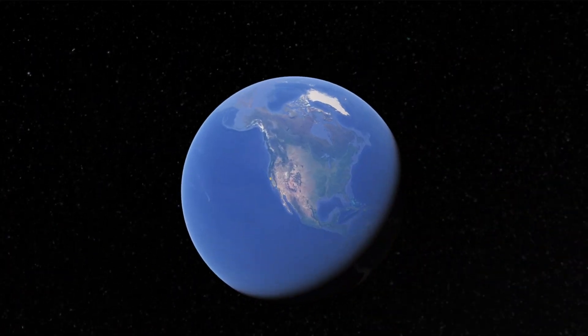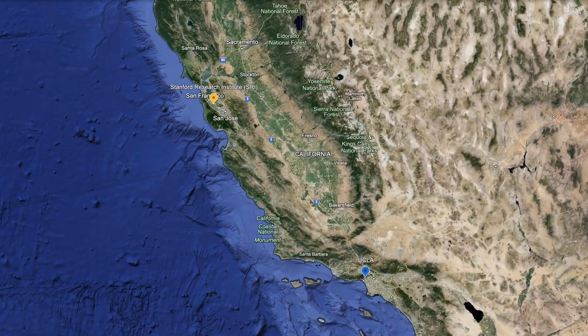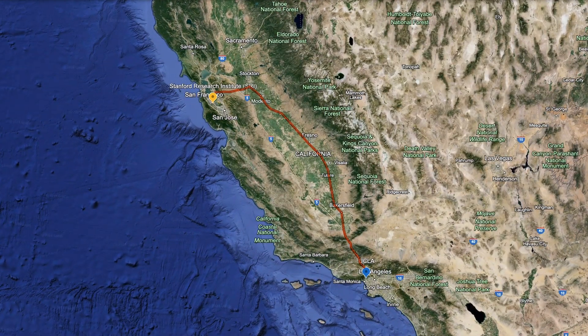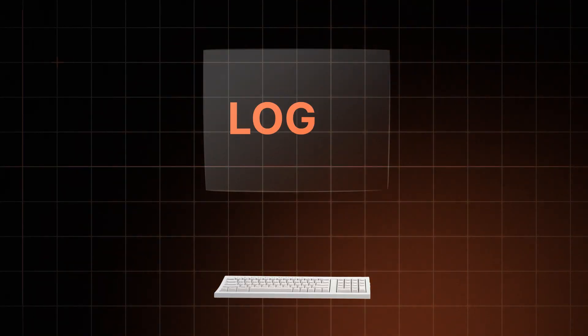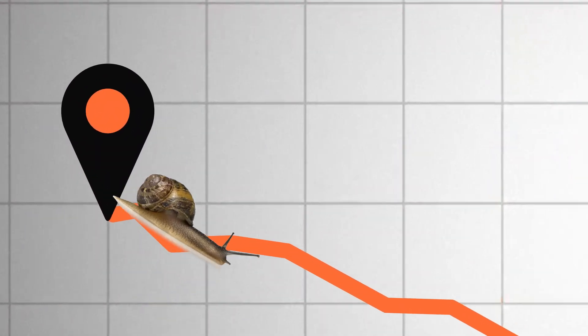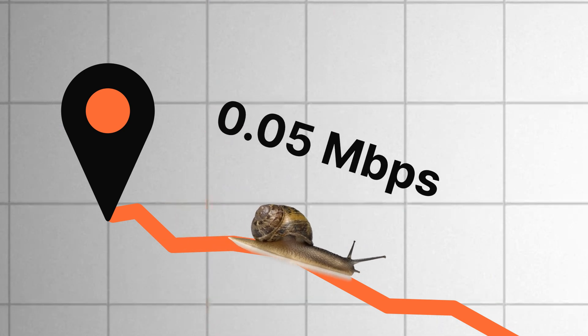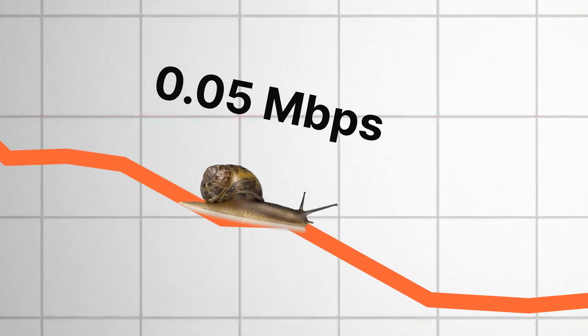Cue ARPANET. Using existing phone lines, scientists from UCLA hooked up their computer to Stanford. For the first ever connection, they attempted to transmit the word 'login' at the blazing speed of 0.05 megabits per second.